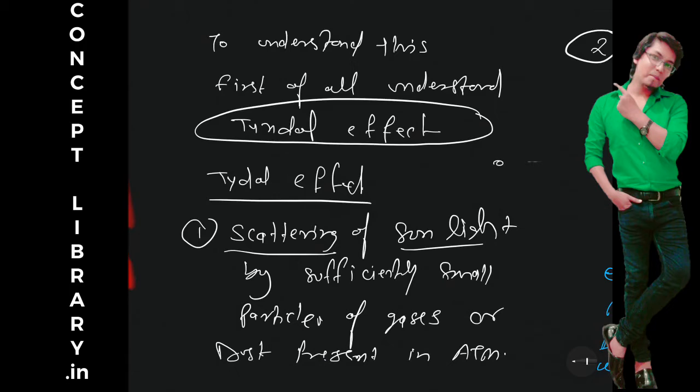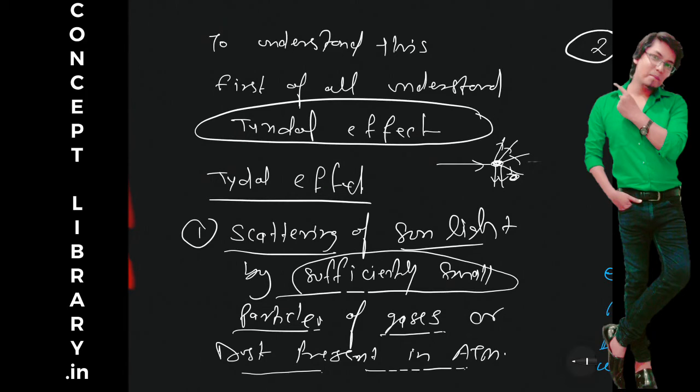What is the meaning of this? If you have a dust particle in the atmosphere then sunlight will fall to that dust particle and then this dust particle will emit the sunlight in all possible directions, right, in 3D not 2D. So scattering of sunlight by sufficiently small particles of gases or dust present in the atmosphere.